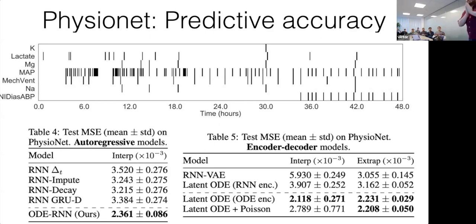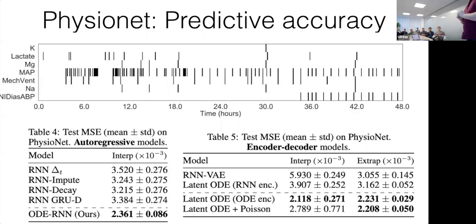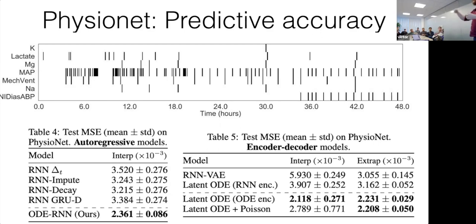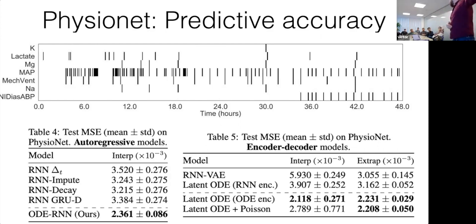You can also condition on the fact that an observation was made at a certain time using a Poisson process likelihood — not just the probability of what the observation is, but the probability of an observation being made at a certain time. Normally we'd have to solve an integral to evaluate the normalizing constant, but we're already solving one of these integrals through time when evaluating our ODE state, so it's just one more dimension to pack onto the ODE. We get Poisson process likelihoods for free, though in this example it didn't help much — maybe because observations are being made all the time.